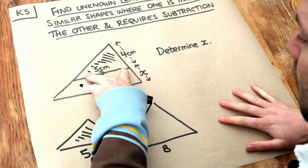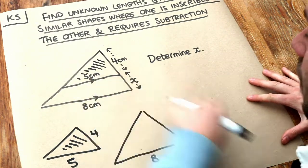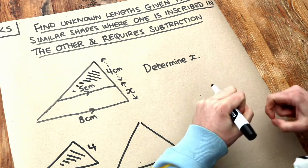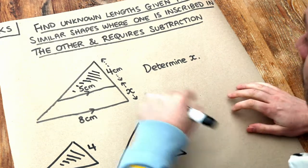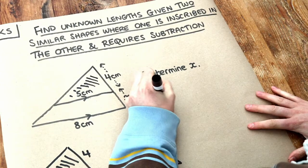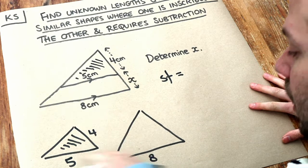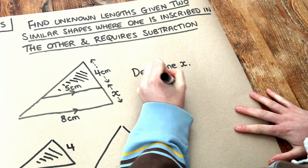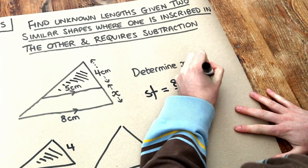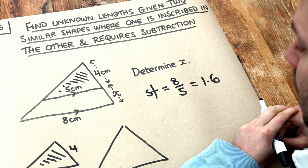To go from the bottom length of the small triangle to the bottom length of the big triangle, we just divide those two numbers to find the scale factor of length — that tells us how many times bigger the lengths are in the bigger triangle. Using the two comparable lengths of 8 and 5, 8 divided by 5 is 1.6. So all the lengths on the bigger triangle are 1.6 times bigger than the smaller triangle.